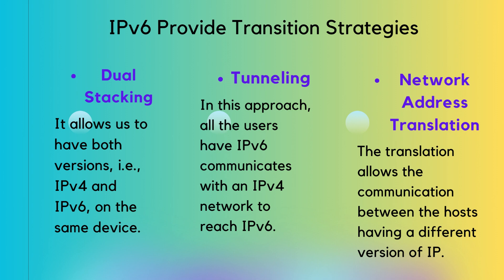The first transitional strategy is called dual stacking. This enables all new devices to have both versions, so the device dynamically decides whether to use version 4 or 6 based on the network it is connected to. The next strategy is tunneling — all users having IPv6 communicate with an IPv4 network to reach IPv6 through a sort of tunnel. The third and final strategy is network address translation, which allows communication between hosts having different IP versions.